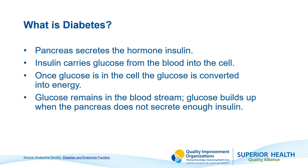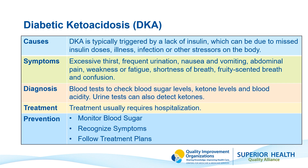Diabetic ketoacidosis, or DKA, is a life-threatening complication of diabetes that occurs when the body produces too many ketones. Ketones are acids produced by the liver when the body breaks down fat for fuel instead of using insulin to allow blood sugar into the cells.